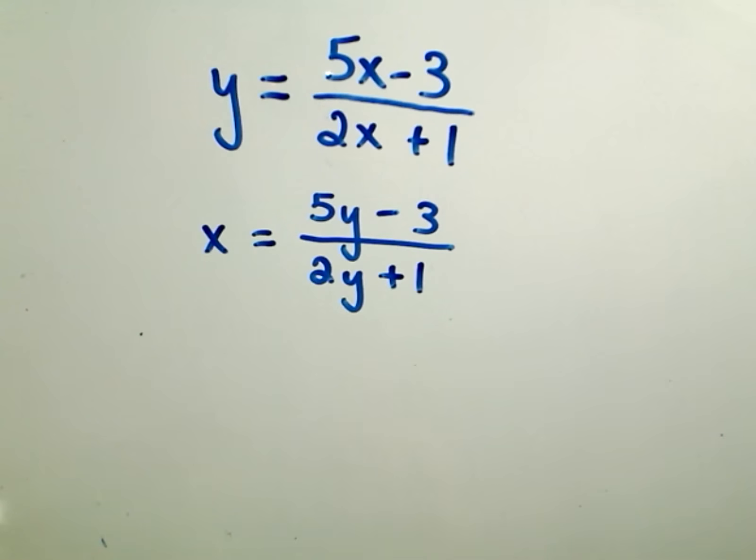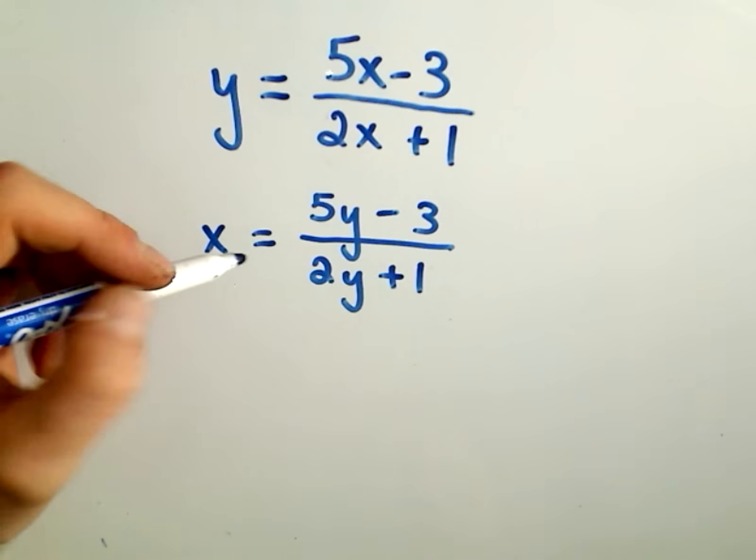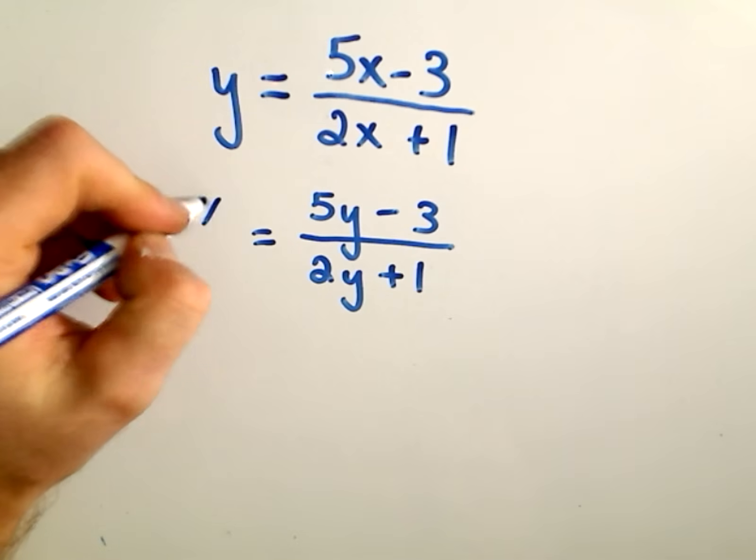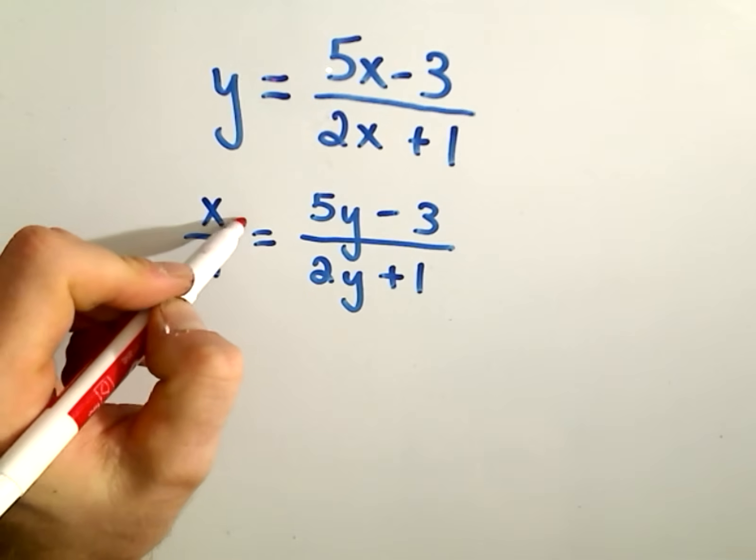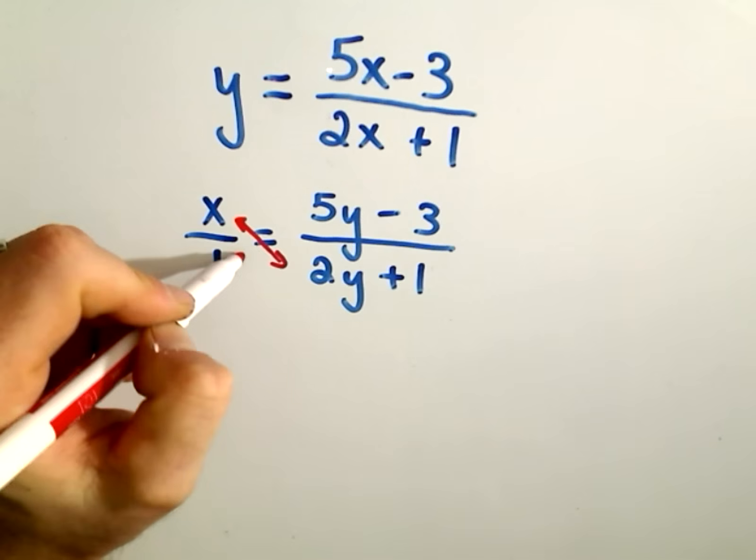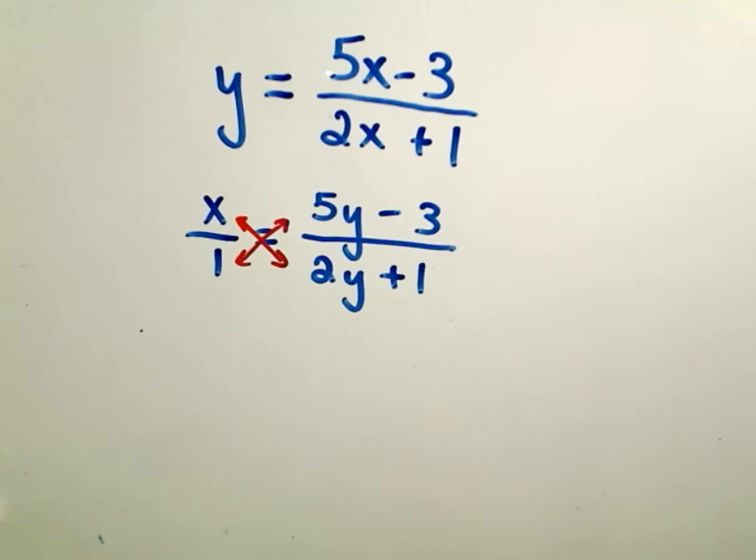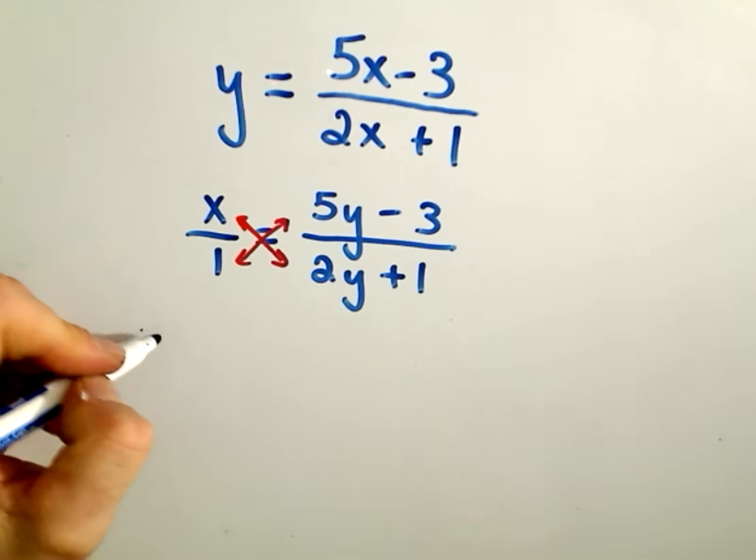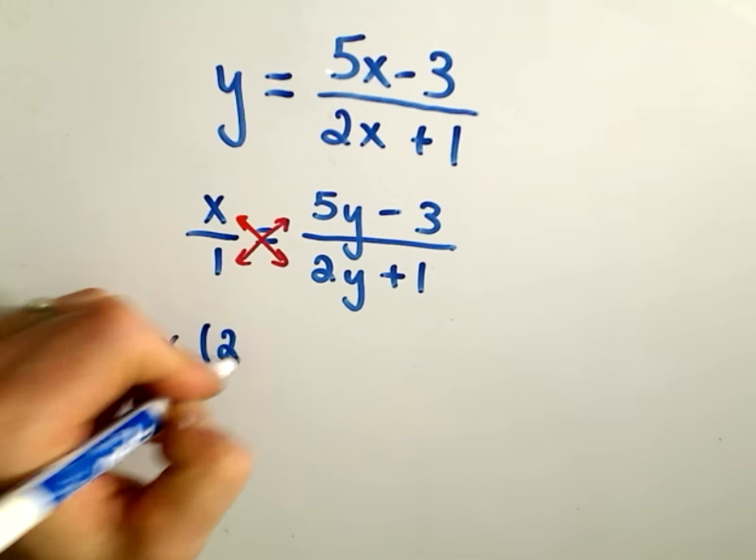To get rid of the fraction, you could think about x as being x over 1. And we can do cross multiplication to get rid of the fraction. So we'll multiply the top left by the bottom right, and the bottom left by the top right.